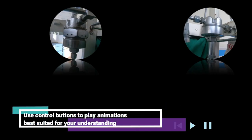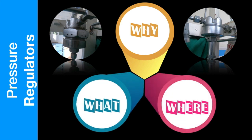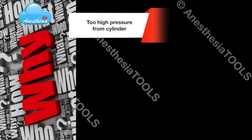Hello and welcome once again to Anesthesia Tools. This edition we'll be discussing pressure regulators in anesthesia machines: why, what, and where. Pressure regulators are used in anesthesia machines for three reasons. One: the pressure delivered from a cylinder is far too high to be used safely in apparatus where a sudden surge of pressure might accidentally be delivered to the patient.